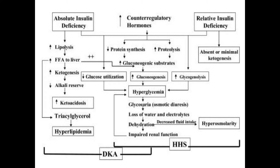In DKA, absolute insulin deficiency increases lipolysis — breakdown of fats — raising free fatty acids. These free fatty acids act as substrate for gluconeogenesis, and on the other side lead to formation of ketone bodies. Alkali reserves decrease, causing ketoacidosis. Triglycerides are also formed from fatty acids, leading to hyperlipidemia. All these ketone bodies lead to ketoacidosis.